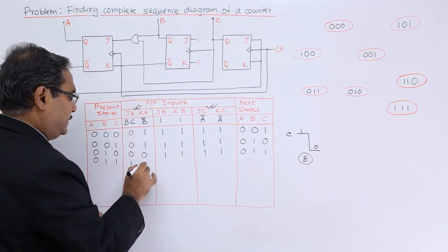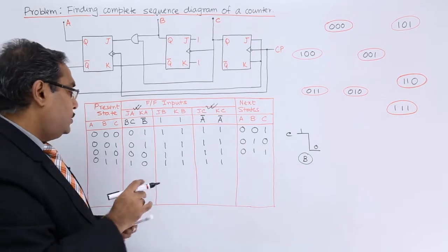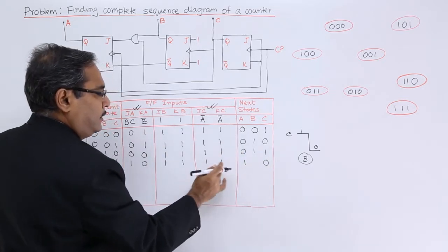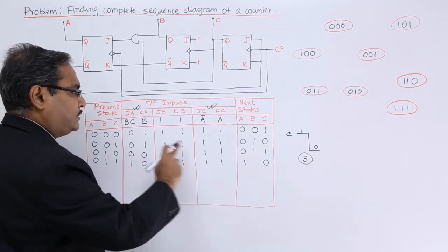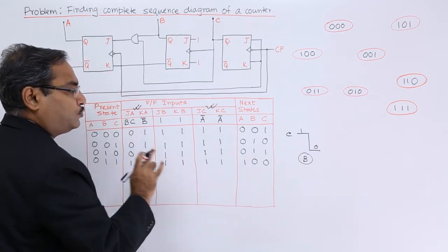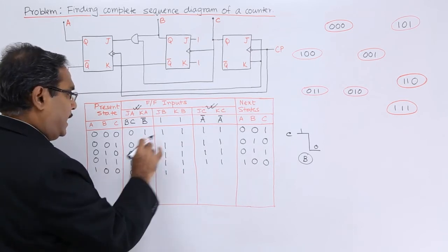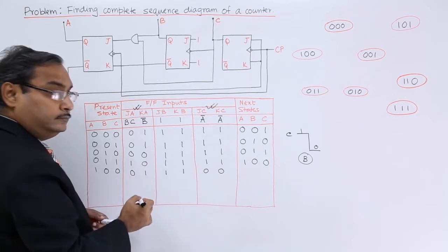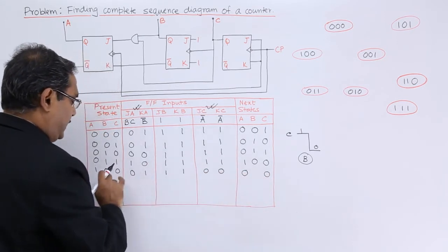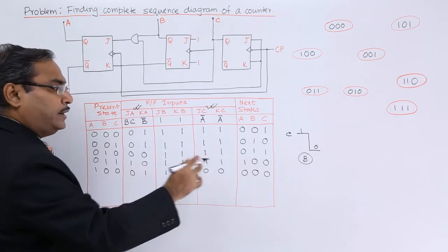For state 0,1,1: BC is 1, B-bar is 0, and A-bar is 1 because A is 0. For 1,0 the next output will be 1. For 1,1 the output will be complemented from 1 to 0. Here we are having a transition from 1 to 0 for C, so B is getting the clock pulse and this 1 will get complemented to 0. For A: 0,1 means next output is 0, and 0,0 means no change — C did not change, so B remains same. Going for state 1,0,0.